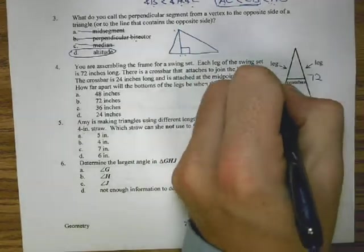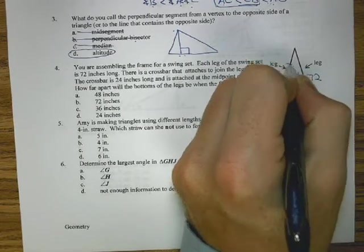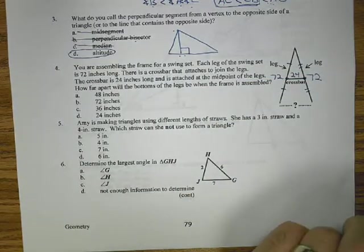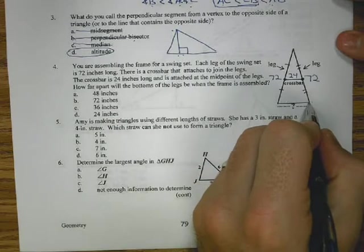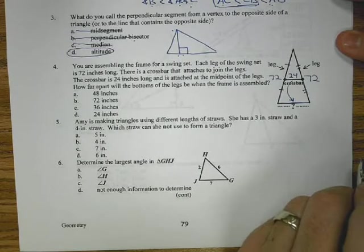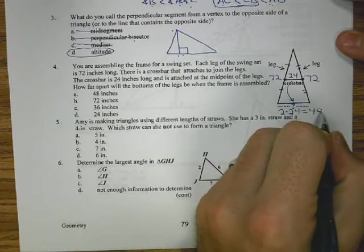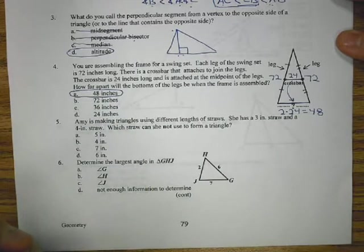For four, we have the legs are 72. The crossbar is 24, and that crossbar happens to be at a midpoint. The key thing is we have that 24 is at a midpoint, which makes it a mid-segment, which means this side out here is going to be 2 times 24, or 48.